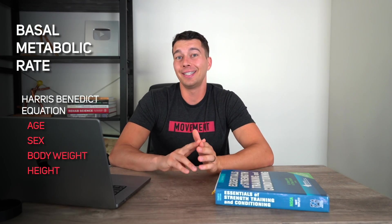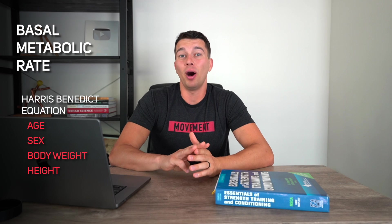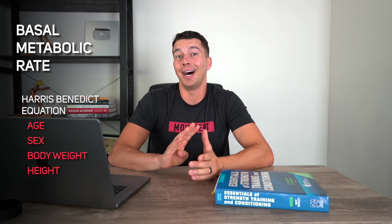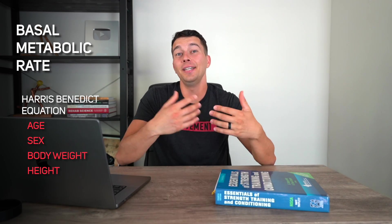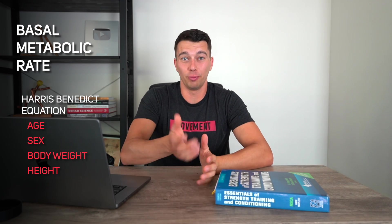To use the Harris-Benedict equation to calculate basal metabolic rate, you'll need four different things: the athlete's age, sex, body weight, and height. You'll plug those into the equation and come out with basal metabolic rate.